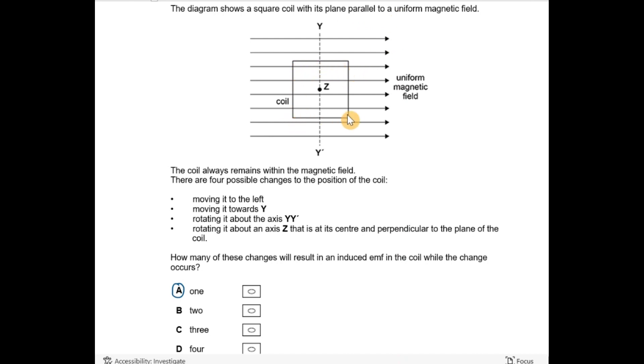So we've got a square coil of wire and it's in the same plane as the paper. The coil always remains within the magnetic field. There's the magnetic field shown by those arrows.